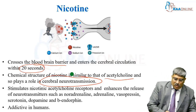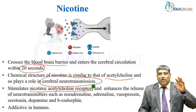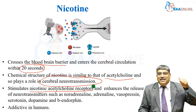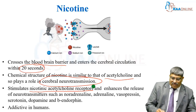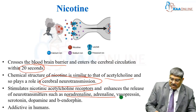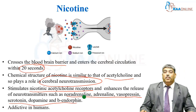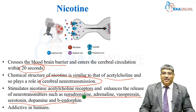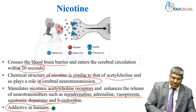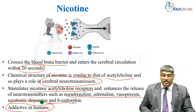When you smoke, nicotine goes and stimulates the nicotinic acetylcholine receptors and it causes the release of various neurotransmitters like noradrenaline, adrenaline, vasopressin, serotonin, dopamine, and beta-endorphin. This leads to addictive effects in humans. So, nicotine is addictive.